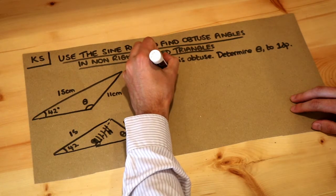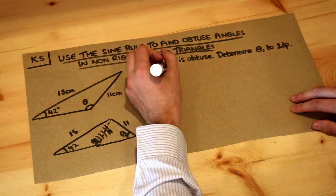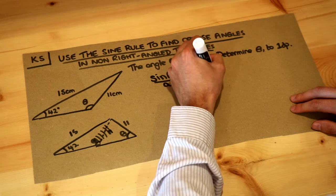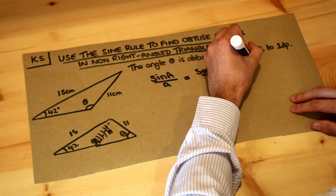Remember we had this flipped version of the sine rule, so sine of particular angle capital A over little a is sine of capital B over little b. So this was the sine rule, and this was the variant of the sine rule where we want to find an unknown angle.